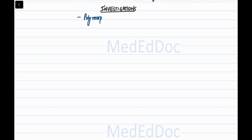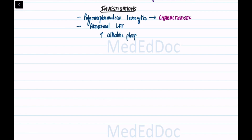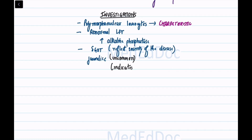Investigations include: Polymorphonuclear leukocytosis is a characteristic feature. Liver function tests may show abnormalities, with elevated alkaline phosphatase being the most consistent finding. The level of SGOT reflects the severity of the disease, and jaundice is uncommon but indicates a grave prognosis if present.